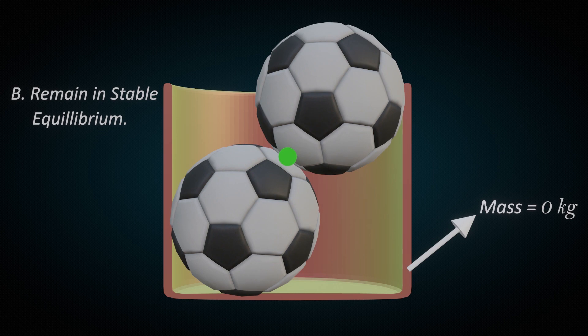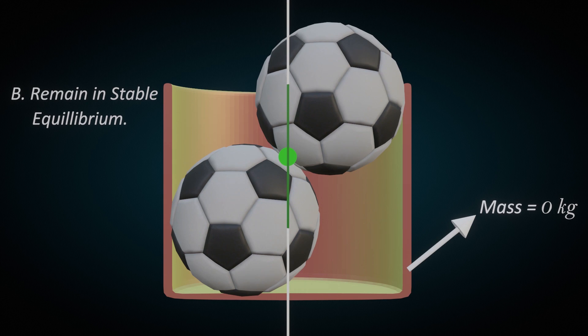This is because both balls are identical, and their mass distribution is symmetrical around this touching point.